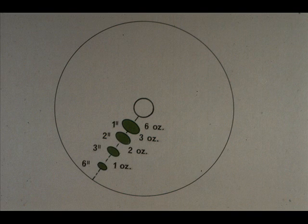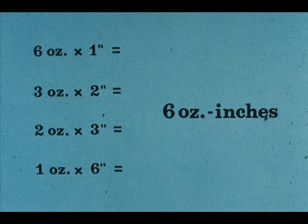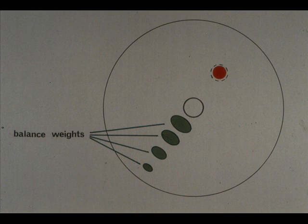We can install a six-ounce weight one inch from the center, a two-ounce weight three inches from the center, a three-ounce weight two inches from the center, or even a one-ounce weight six inches from the center. By looking closely, you'll see that the weight of each counterweight multiplied times the radius in inches gives the same result in each case: six ounce-inches. Therefore, any of these adjustments would serve to counterbalance the two-ounce heavy spot three inches from the center of the flywheel.